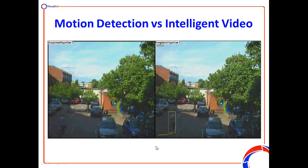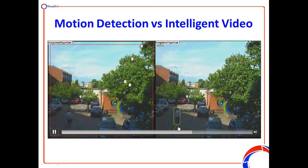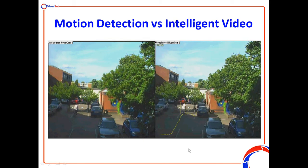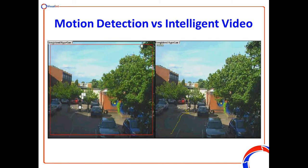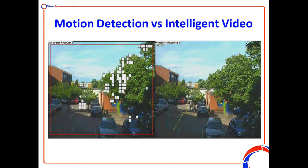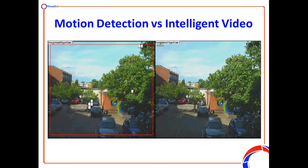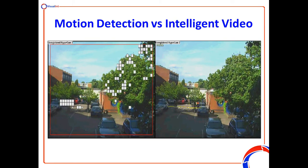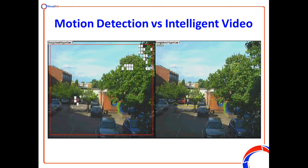This is far more useful when it comes to identifying and triggering things. Now you can see clearly this gentleman here is walking up through the image, and there's clearly a yellow rectangle around him, with a yellow trail showing where he's been. There's also a motorcyclist and another person walking past. So far more useful — you can really see the power of what the Visual Int cameras can do.